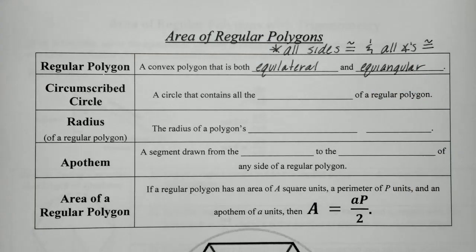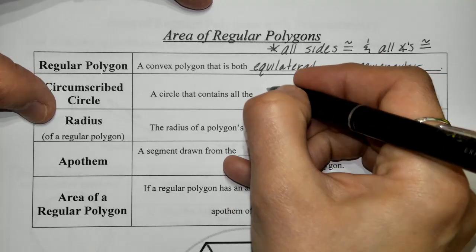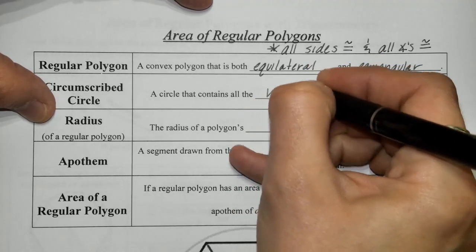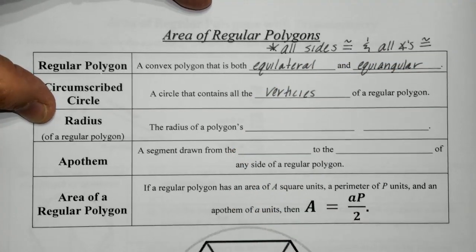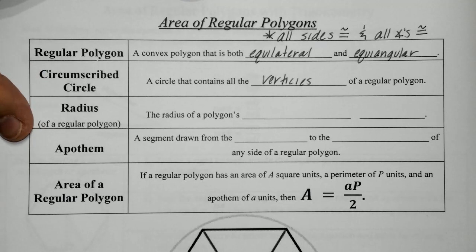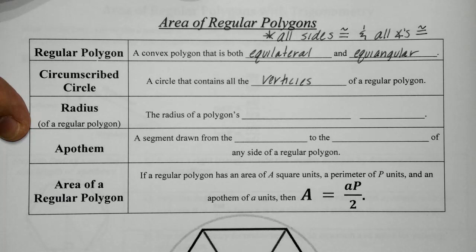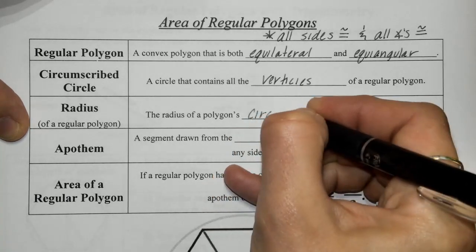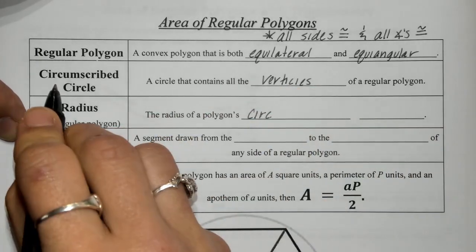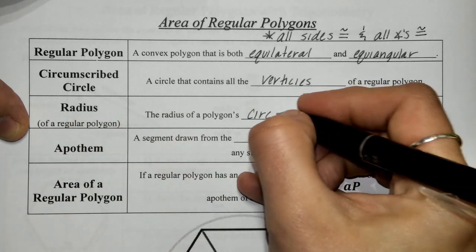A circumscribed circle is a circle that contains all the vertices of the regular polygon. We'll get more into that in a little bit. The radius of a regular polygon is the radius of the polygon's circumscribed circle — that circumscribed circle we just talked about.